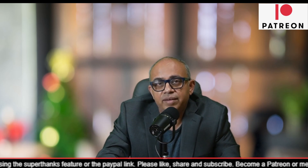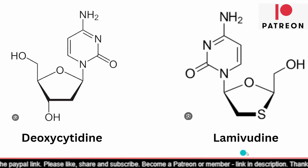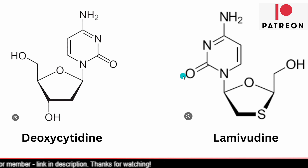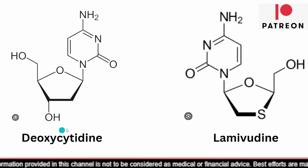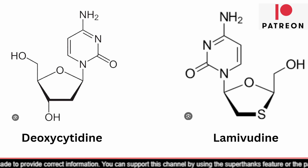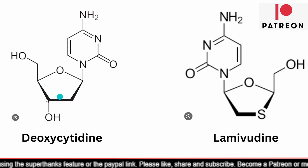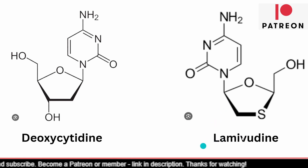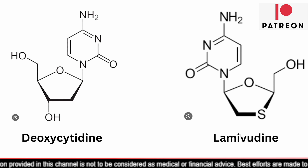Now let me show you this diagram and explain the 3' prime concept. On the right side I have the lamivudine structural diagram and on the left side I have deoxycytidine. The main difference is that lamivudine does not have the 3' hydroxyl group which is present in deoxycytidine. When reverse transcriptase takes up lamivudine by mistaking it for deoxycytidine, the next nucleotide cannot be attached because lamivudine lacks the 3' hydroxyl group. As a result, the chain terminates and the viral DNA cannot be synthesized and therefore will not be incorporated into the host DNA. This is how lamivudine saves the cell from viral DNA.